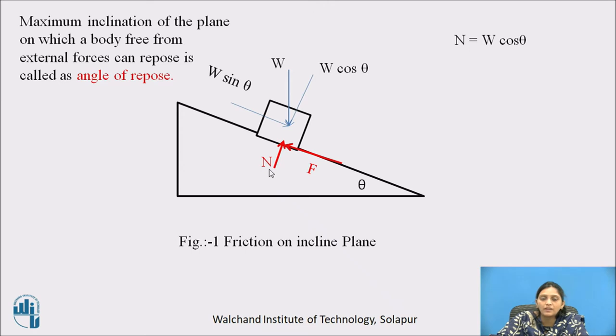As it is a case of static friction, we can say it is in equilibrium. So summation Fy equals zero, which means N equals W cos theta. In the X direction there are two forces: W sin theta and F. To maintain equilibrium, these two forces must be equal, so F equals W sin theta.